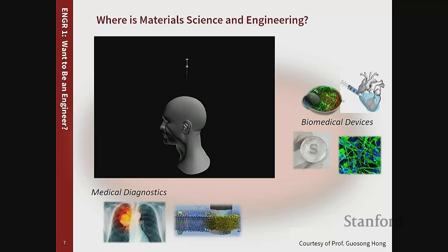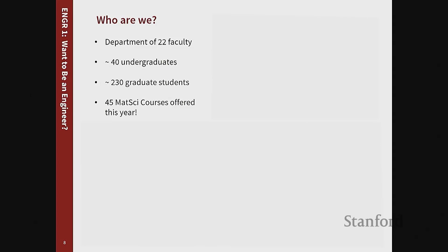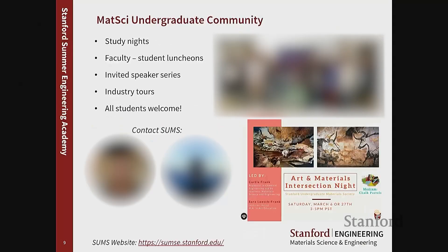Those are just two examples of where material science and engineering shows up — there are many, many more. Our department has 22 faculty, about 40 undergraduates, and many more graduate students, with lots of different classes offered throughout the year. What makes it great is our department culture really combines everyone together — we have lots of events where faculty, graduate students, postdocs, and undergrads are all together chatting about things they're passionate about. We have a really vibrant undergraduate community. We have a great undergraduate student organization called SUMS that puts on study nights, guest speakers, industry tours, and other great events for you to learn about our department culture, meet fellow students, and get connected to our broader materials community.